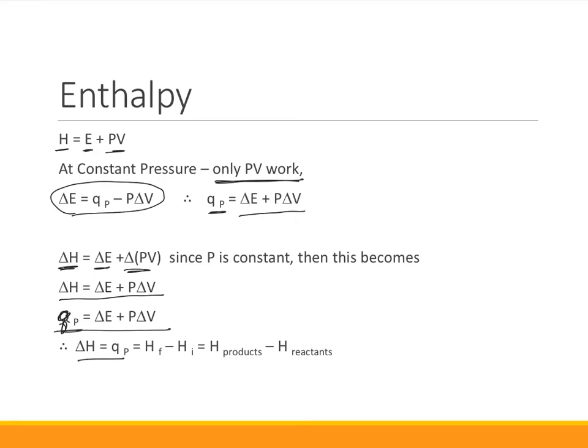Another way to state ΔH would be the enthalpy content of the final portion minus the enthalpy content of the initial. In chemical reactions, the final is our products and the initial is our reactants. So the enthalpy content of the products minus the enthalpy of the reactants is the change in enthalpy.